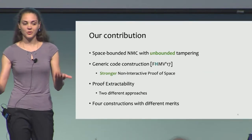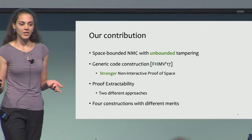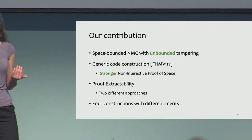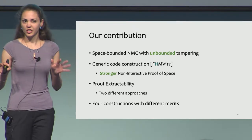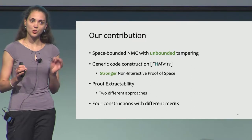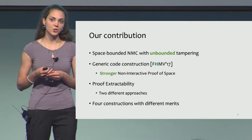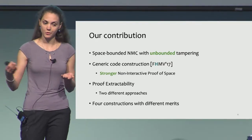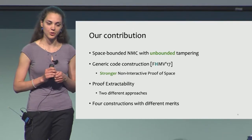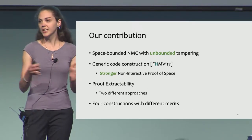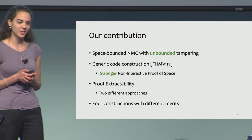Our goal is to have a space-bounded non-malleable code for unbounded tampering. We looked at the generic code construction from the prior work and kept the construction as it was, but instantiated it with a stronger building block. In particular, we defined something we call proof extractability of proof of space, and we showed two different approaches how to construct such a proof of space, ending up with several constructions that have different parameters.